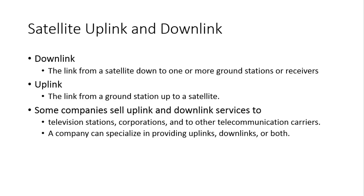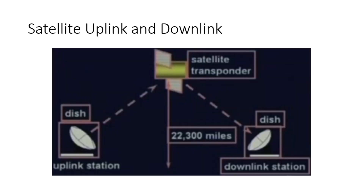Satellite uplink and downlink. Downlink is the link from a satellite down to one or more ground stations or receivers. Uplink means the link from the ground station up to a satellite. Some companies sell uplink and downlink services to television stations, corporations, and other telecommunication carriers. If you observe in the diagram, the satellite transponder is on the top. The uplink station uses a dish to provide signals to the satellite, and on the other side there is a downlink station where the dish receives the signal from the satellite transponder to serve different users.